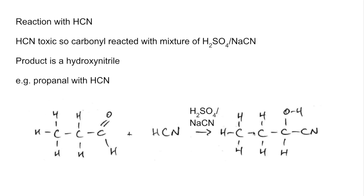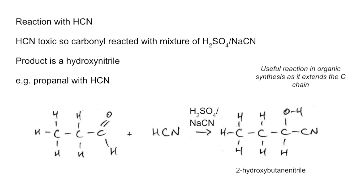Counting the carbons in the product — one, two, three, four — so it's going to be a butanenitrile. We've got a hydroxy group on carbon number two. Remember this is carbon one because it carries the nitrile functional group, so the product is 2-hydroxybutanenitrile. This is a really useful reaction in organic synthesis because it enables you to extend the carbon chain.